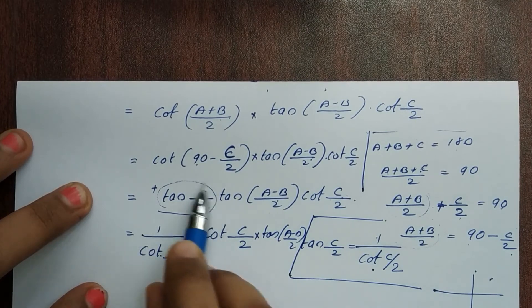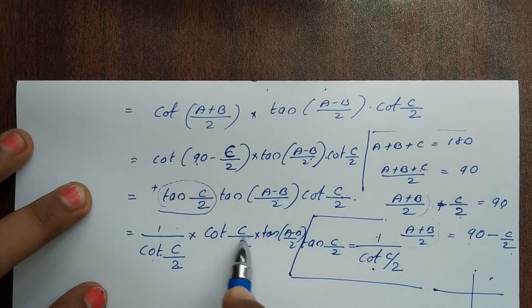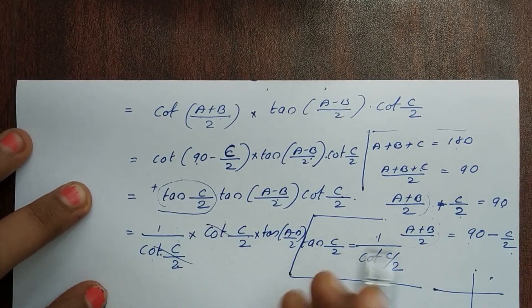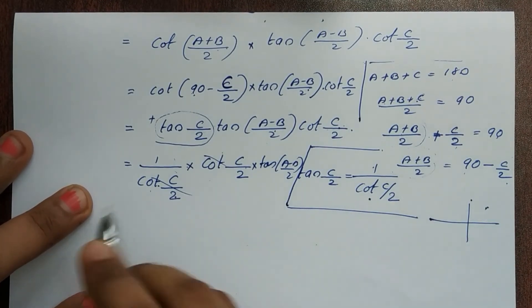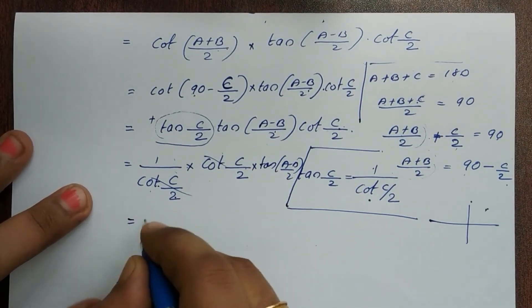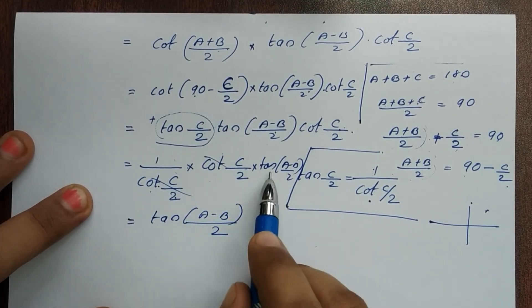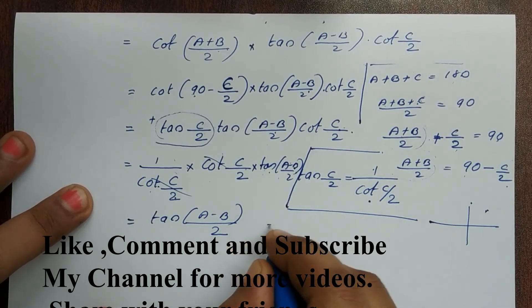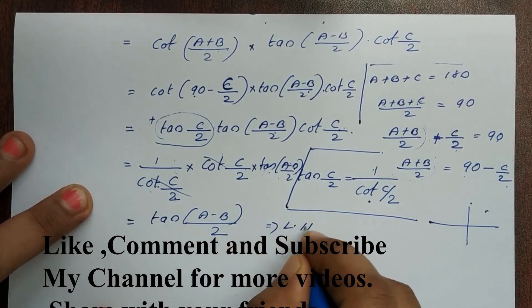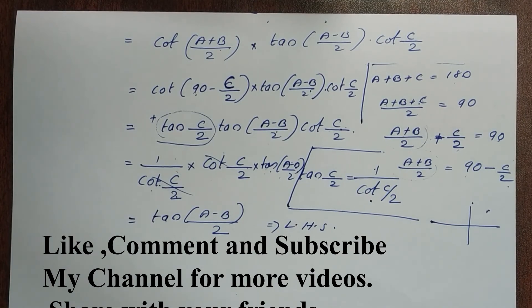Therefore the answer is tan((A minus B)/2) is equal to (a minus b)/(a plus b) into cot(C/2). So LHS is equal to RHS, and the proof is complete.